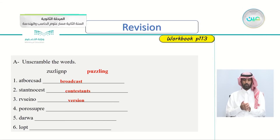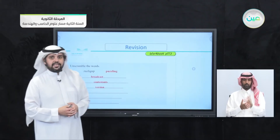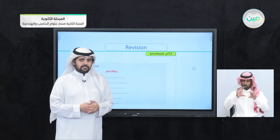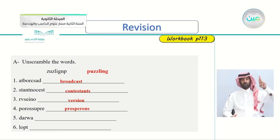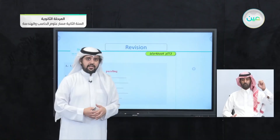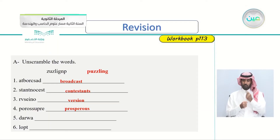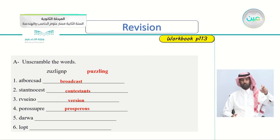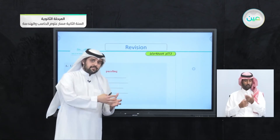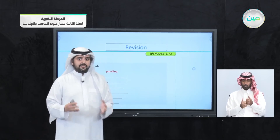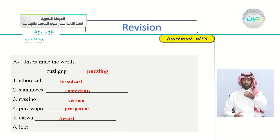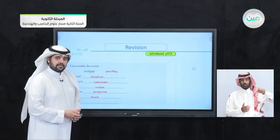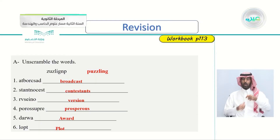Number four: P-O-R-O-S-S-U-P-R-E — the word is 'prosperous,' which is a synonym for 'thriving,' meaning doing well. Number five: D-A-R-W-A — here's a hint: the thing you win at the end of a quiz show or contest. The answer is 'award.' Number six: L-O-P-T — this is an easy one. The story. The answer is 'plot,' meaning the story of a show or program.